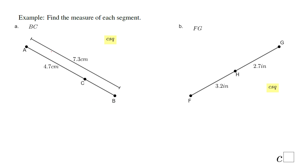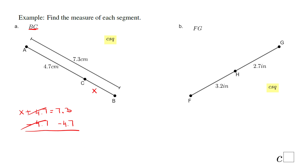In this first example, we need to find the length of the measure of BC. BC is right here. I'm going to call it X, which makes things easier. I'm going to say X plus 4.7 equals 7.3. I can write an equation and solve for X. I'm going to subtract 4.7 on each side. 7.3 minus 4.7 gives us 2.6. So the measure of segment BC is 2.6 centimeters.